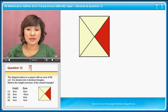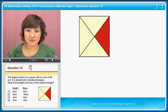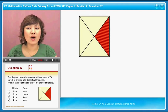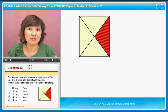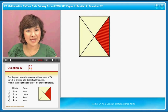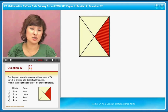Question 12. The diagram below is a square with an area of 64 square centimeters. Now it is divided into four identical triangles as you can see in the figure. What is the height and the base of the shaded triangle?